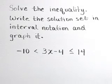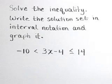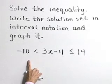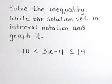Solve the inequality, write the solution set in interval notation, and graph it. Here we have the inequality: 3x minus 4 is greater than negative 10 and less than or equal to 14.